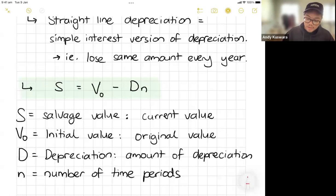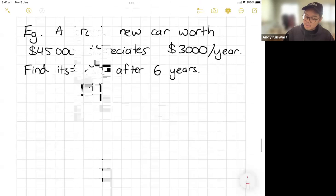And again, there's lots of different ways to apply this formula. But let's apply it to a question like this. I'm going to write down the formula: S equals V0 take away DN. Because I can see the word depreciates in the question.